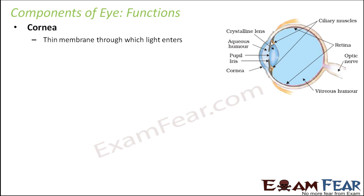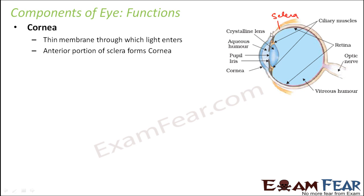The portion of the eye which is visible from outside — the white portion — that is nothing but the cornea. The anterior portion of sclera forms the cornea, which is the outermost layer. So if you see the front portion of sclera, it forms the cornea, and this is the portion which is visible from outside.